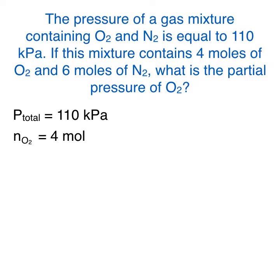What the 6 moles does help us with is determining the total moles. If there are 6 moles of nitrogen and 4 moles of oxygen, we know there must be 10 moles of gas in total in our mixture.